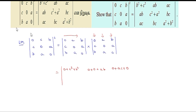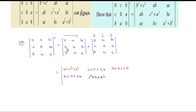Second row, first column gives 0 plus 0 plus AB. Second row, second column gives C squared plus 0 plus A squared. Second row, third column gives BC plus 0 plus 0.